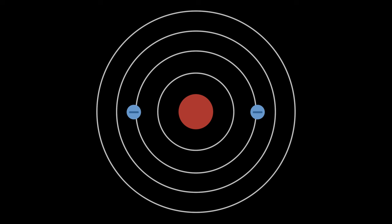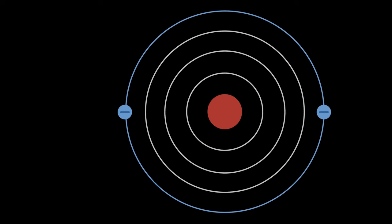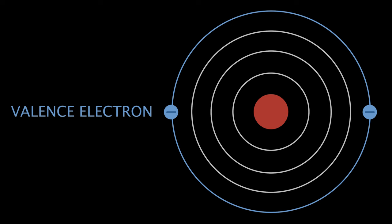The electrons on the outermost shell of an atom are known as valence electrons, and they play a crucial role in chemical reactions.